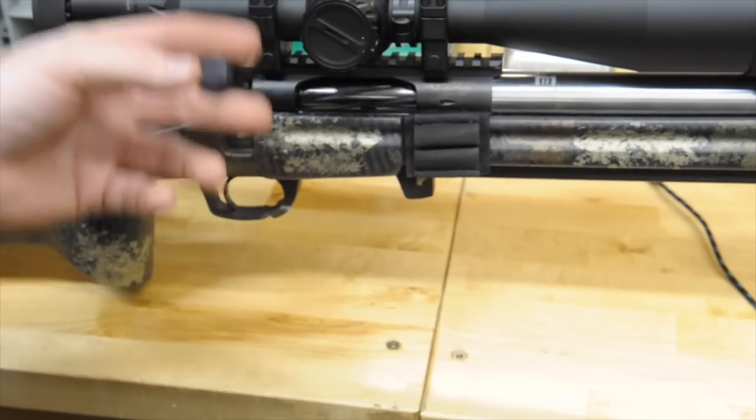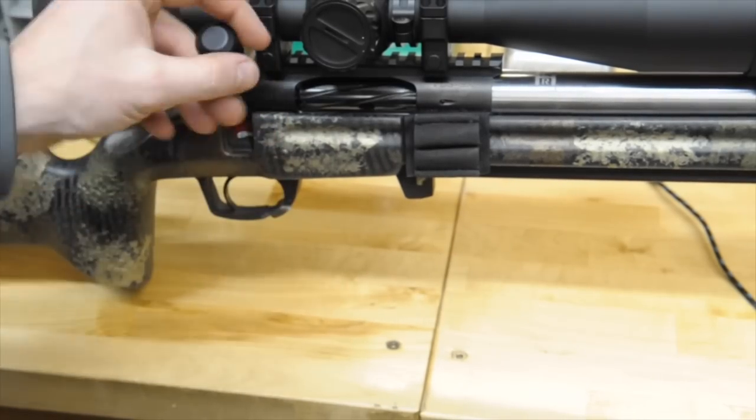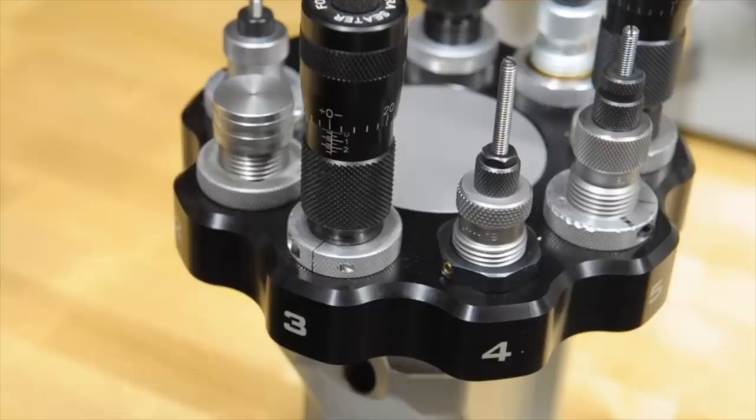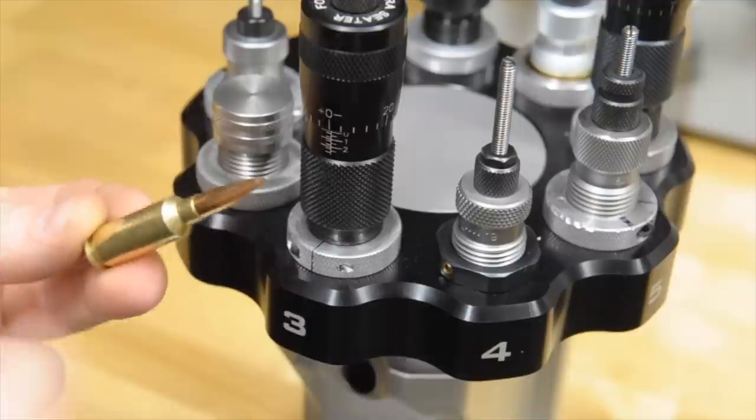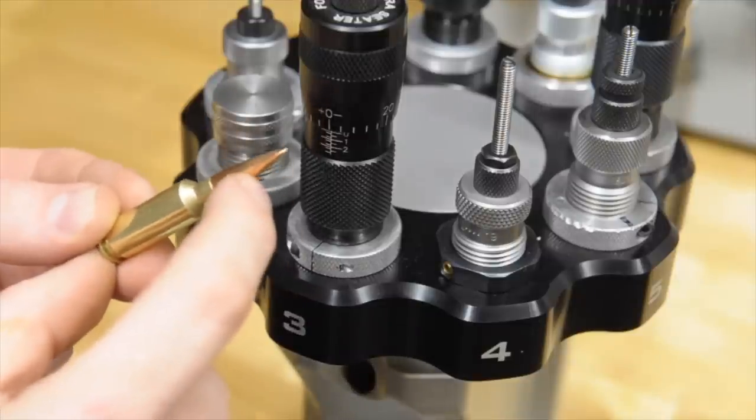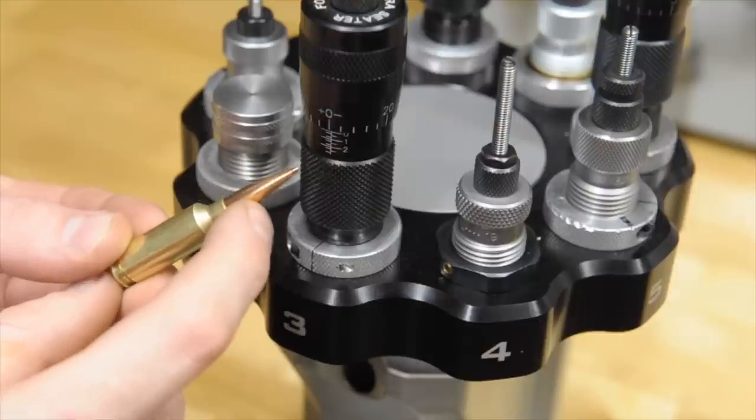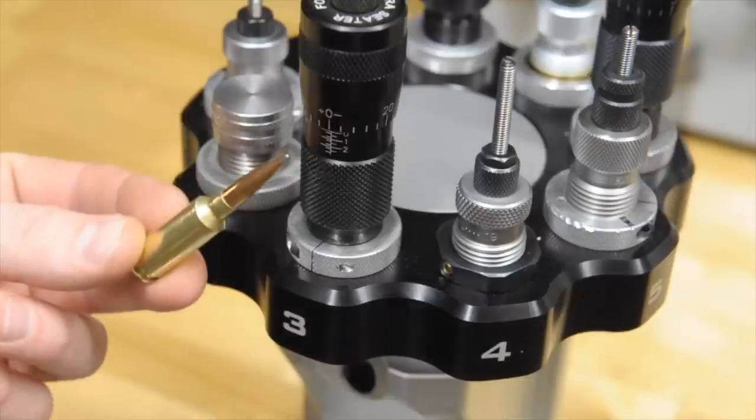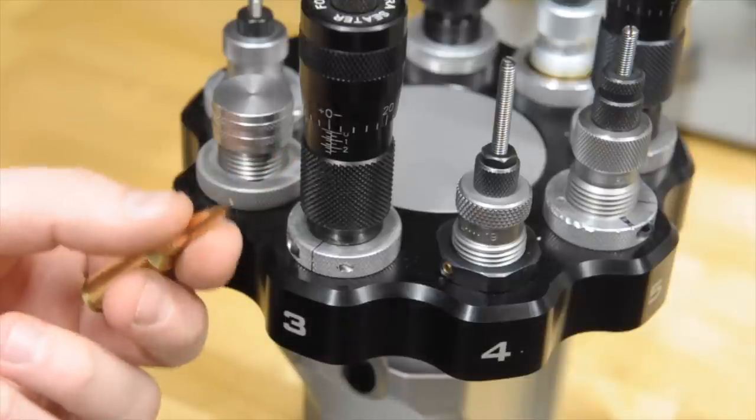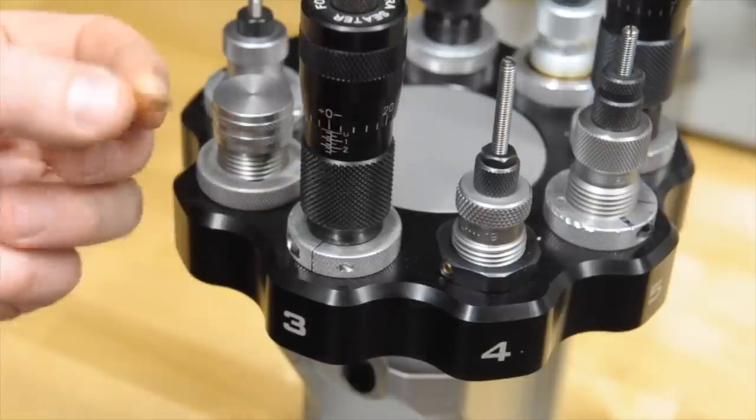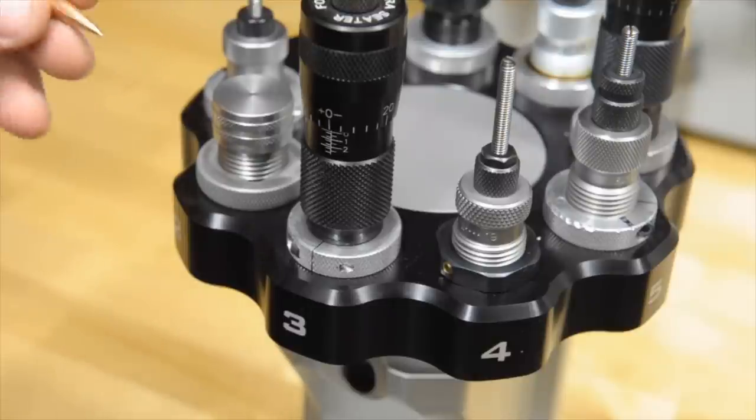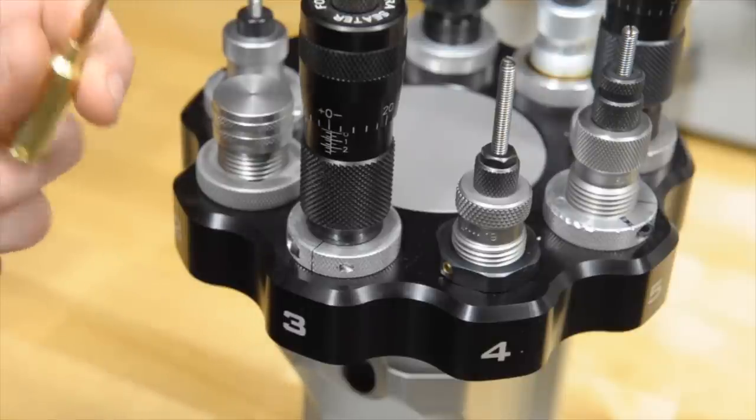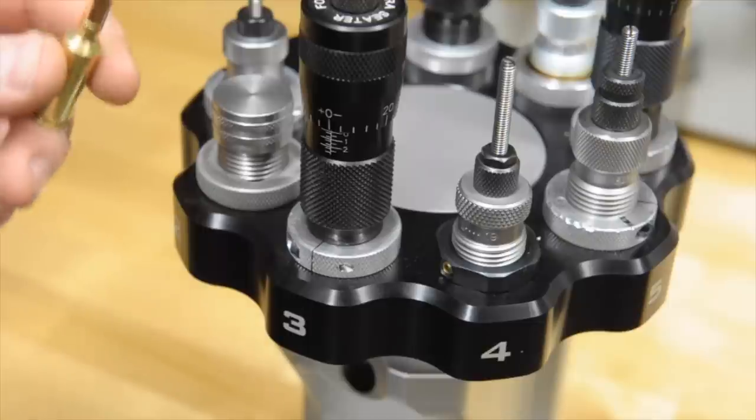So if it was me, this is at the point where I would take a base to ogive measurement or keep this dummy around. A notebook with measurements, notes, anything at all when you start reloading is good to have. Something good to revert back to. But this is where I would call it good. This is where I would say, hey, here's where my lands are. You could go a thou, two thou, three thou, and really find exactly where that click stops.